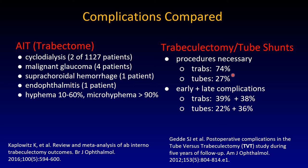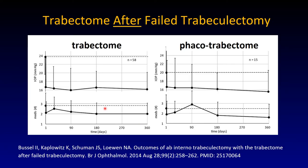Tubes became more popular in the United States partly because of those results. The primary TVT study didn't show such a big difference, but tubes still handle a little easier. They remain a favorite because with trabeculectomies you have to see patients every week and inject them with 5-FU to manage scar tissue, whereas with tube shunts you basically just sit there and add medications if necessary.